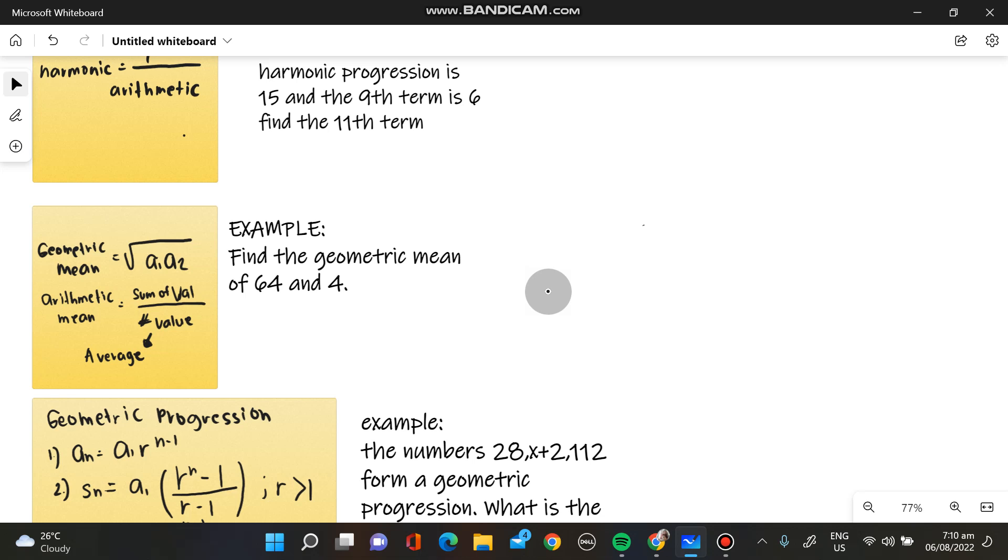We are tasked to find the geometric mean. So we have the given, which is A sub 1 is equivalent to 64, and then A sub 2 is equivalent to 4.